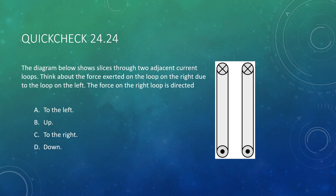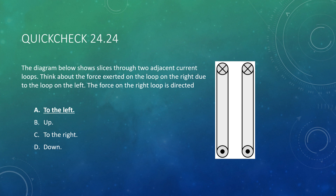Next question: the diagram shows slices through two adjacent current loops. Think about the force exerted on the loop on the right due to the loop on the left. We have current moving in the same direction in this diagram — into the page at the top, out of the page at the bottom. Current moving in the same direction causes an attractive force between the two current loops. If we have an attractive force, the loop on the right will be forced toward the other one, to the left. The answer is A — these two loops should each be attracted toward one another.